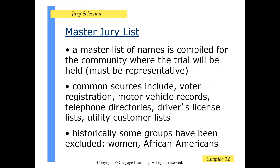A master jury list is names compiled from the community where the trial will be held. Common sources include voter registration, motor vehicle records, telephone directories, driver's license lists, and utility customer lists. Historically, some groups have been excluded from master jury lists, like women and African Americans.